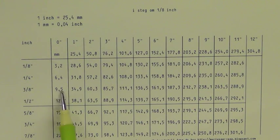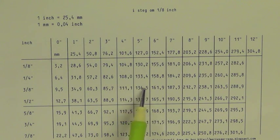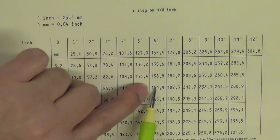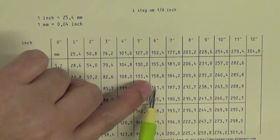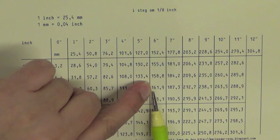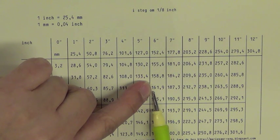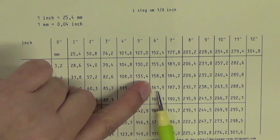And then you just follow this line until you come to your 6 inch here. And then you can read out 161.9 millimeters. So I would make it 162 millimeters.